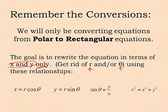You're going to use the same relationships we used before: x equals r cosine theta, y equals r sine theta, tangent of theta is y over x, and r squared is x squared plus y squared. We're going to use what we know to get things in terms of x and y using these four strategies. Don't forget them. Have them handy.